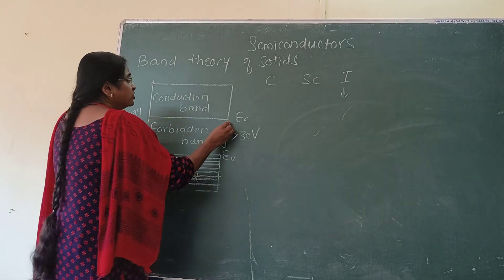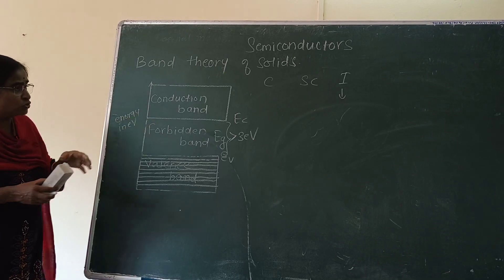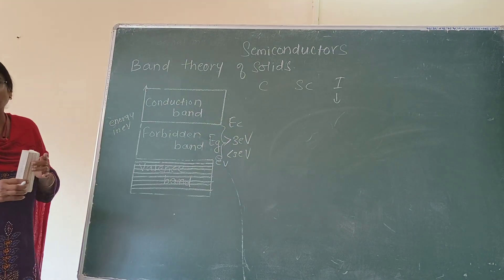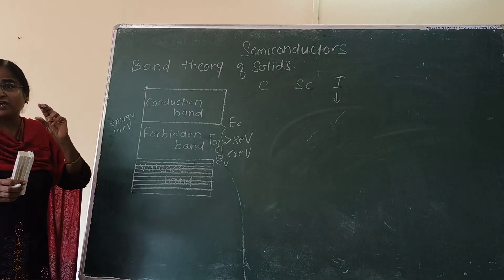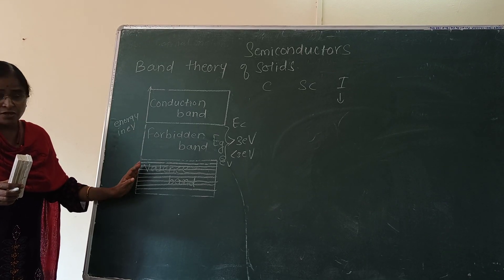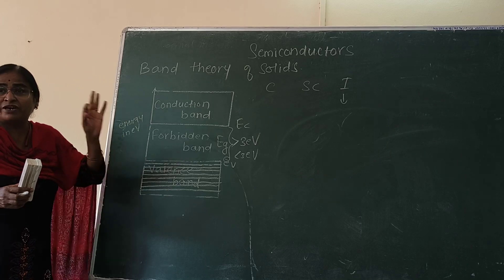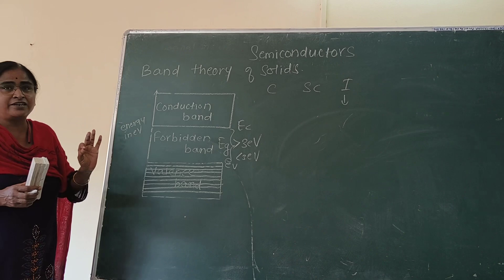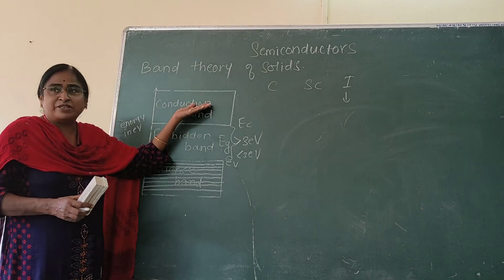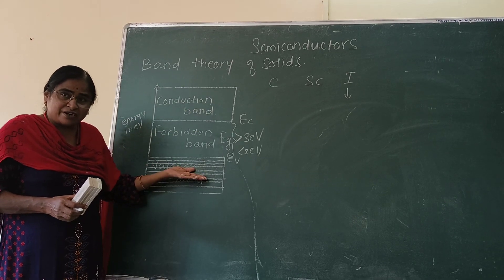There are certain solids in which the forbidden band has a moderate width — it exists, but the width is small, around the order of 1 electron volt, less than 3 electron volts. In such solids where the forbidden gap is very small, at absolute zero temperature the valence band electrons will not have any energy to cross over the gap and come into the conduction band, so the solid will behave as an insulator at absolute zero. But at slightly higher temperature, the valence band electrons can cross over the smaller gap and get into the conduction band, and once they come into the conduction band they contribute towards conduction of electricity. So at slightly higher temperature, the same material behaves as a conductor.